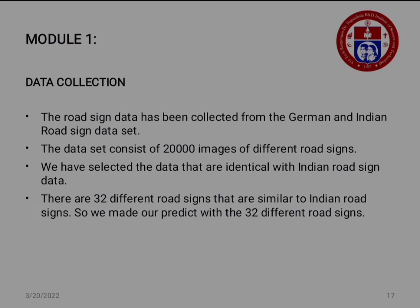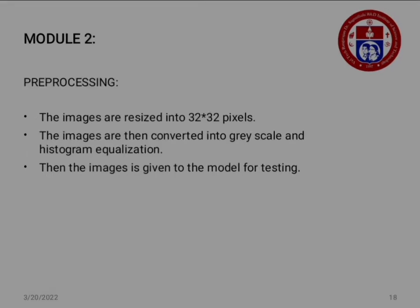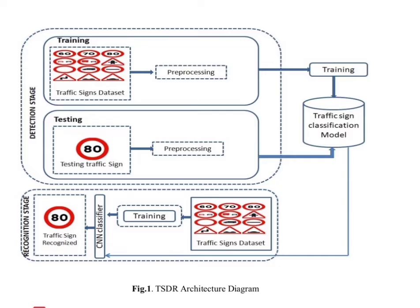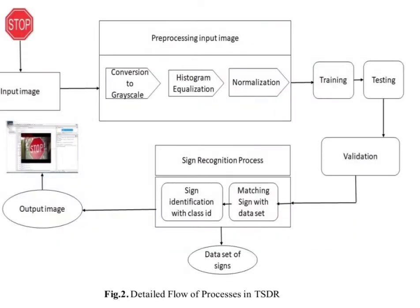Now we will discuss the design and methodologies of this project. The suggested system uses a CNN algorithm to detect and recognize traffic signs. Pre-processing of the input is done before classification to remove noise and reduce complexity. We used technologies like deep learning, computer vision, and Python to build this application. The proposed TSDR model will detect 32 different road signs. We trained the model with 20,000 images collected from German and Indian road signs datasets. We used Keras, which provides vast features enabling us to build a model that detects road signs with accuracy above 90 percent. This is the detailed flow of processes in traffic sign detection and recognition.